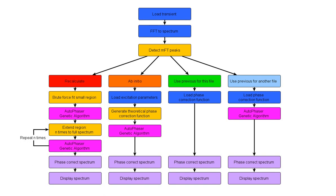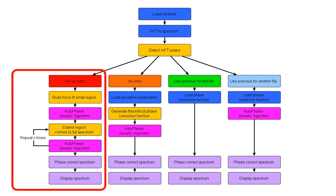Unfortunately you can't simply use the brute force method to fit the phase correction function over the complete spectrum in one step because there are too many potential solutions to search. This Recalculate route will work for both ICR and Orbitrap mass spectra, so let's look at this working for both of these types.